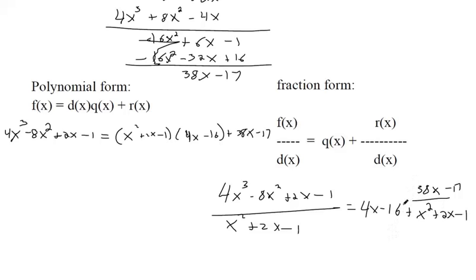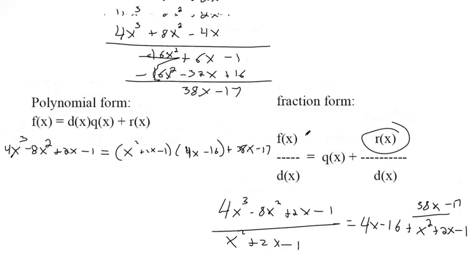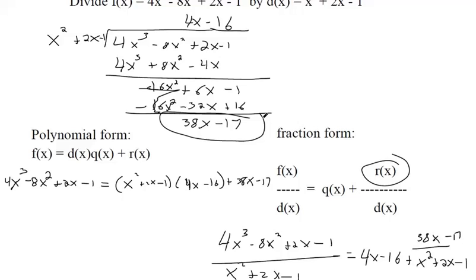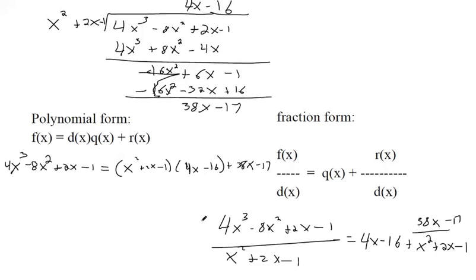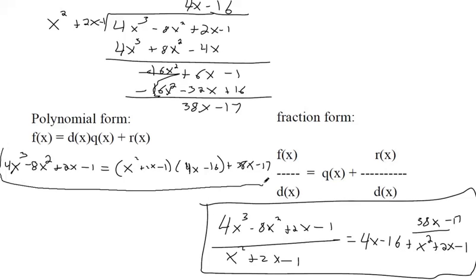Okay, I'm not sure why my brain was doing that, but I put in a remainder for r of x, which was 38x minus 17. A divisor is x squared plus 2x minus 1, so that's what went in the bottom. Q of x, that's the quotient. So that's why that goes there. And just plugging everything in where it's supposed to go. So there's your two forms of the answer.